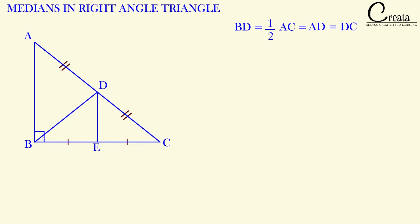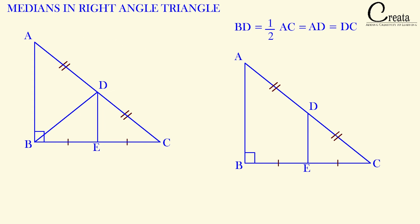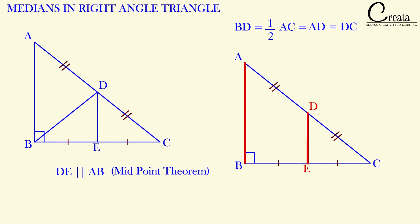If we observe triangle ABC and line segment DE — are you able to correlate this figure with the midpoint theorem? D and E are the midpoints of AC and BC respectively. As per the midpoint theorem, a line segment joining the midpoints of two sides of a triangle is parallel to the third side. So DE will be parallel to AB, because D and E are midpoints connecting the two sides AC and BC.